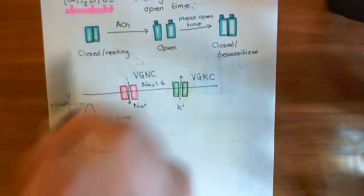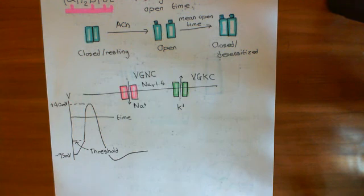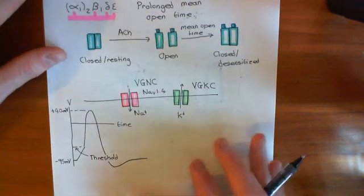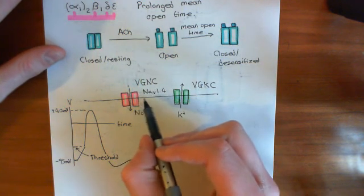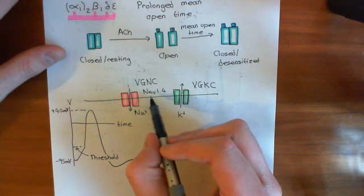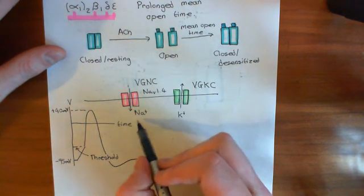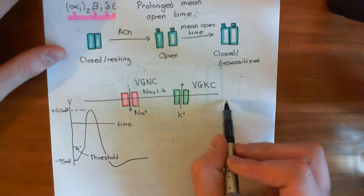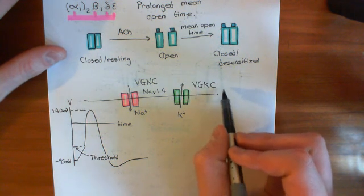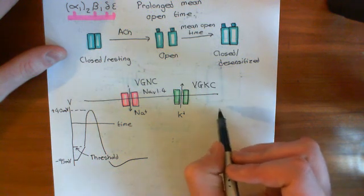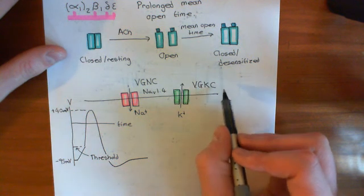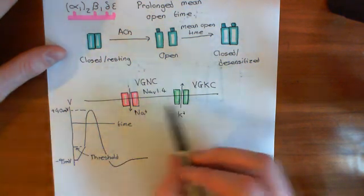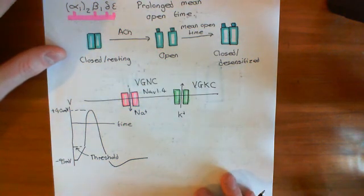Both channels go back to the closed/resting state. The action potential propagates along the sarcolemma because during the upstroke, large amounts of sodium ions enter the cell and diffuse over to the neighboring portion of membrane, causing depolarization of the electrical potential difference there — raising the intracellular potential since sodium is positively charged, making the potential difference across the membrane less negative. That's how the action potential propagates along the sarcolemma, and we'll continue this discussion in the next video.